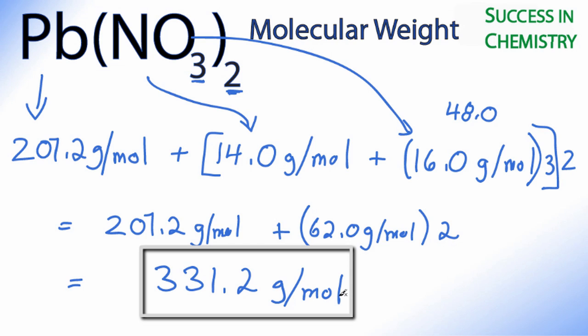And that's the molecular weight or molar mass for Pb(NO3)2. So when you have these multiple subscripts, try to break it up. Do the math inside here and then multiply times that, and that will make it a lot easier.